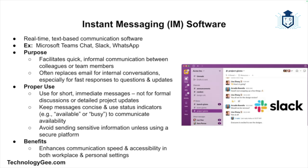Next, let's talk about instant messaging software, which is designed for real-time text-based communication. Examples include Microsoft Teams Chat, Slack, and WhatsApp. Its purpose is for quick, informal communication between colleagues or team members, and it's often used in place of email for internal conversations, especially for questions and updates that require a fast response. Use instant messaging for short, immediate communications rather than formal discussions or detailed project updates. Keep messages concise, make use of status indicators to communicate your availability, and avoid using instant messaging for sensitive or confidential information unless you're using a secure platform.